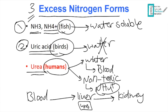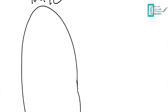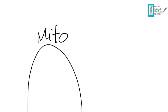Ammonium reaches the liver and forms urea there. After that, urea moves through the blood to the kidney to be secreted in urine. The urea cycle consists of five steps that happen in the liver — two of them are in the mitochondria matrix and the remaining three are in the cytosol.